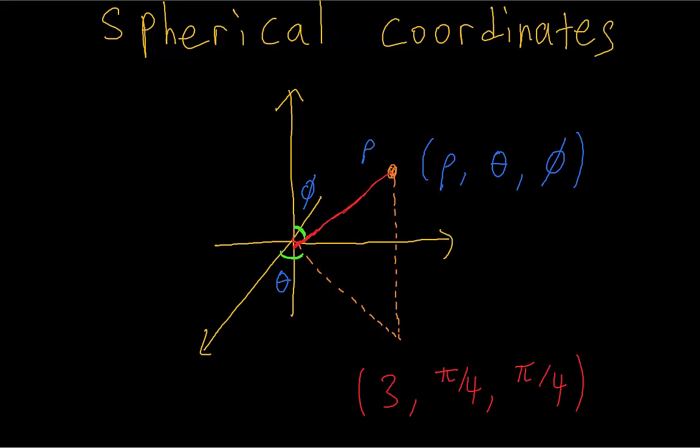We can look at some simple surfaces in spherical coordinates. If we just have rho equals something, say rho equals 1, then that's going to be a sphere.